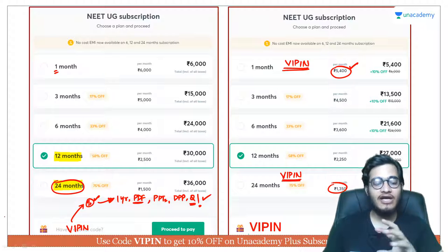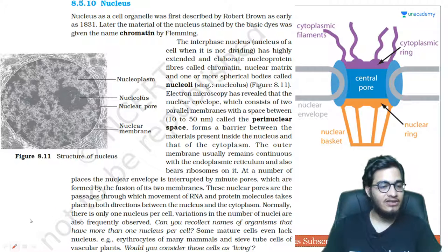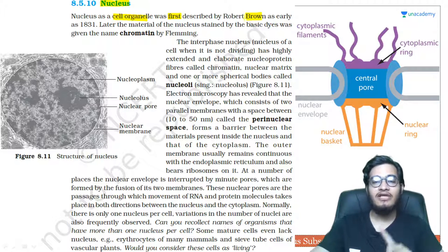So overall you will get a complete package for the preparation of NEET. Let's see what's written in the theory. We are going to talk about the nucleus. Nucleus as a cell organelle was first discovered by Robert Brown. We studied in the beginning of this chapter that Robert Hooke first saw the dead cell, Anton von Leeuwenhoek first saw the living cell, and Robert Brown discovered the nucleus in 1831.